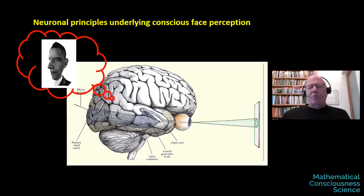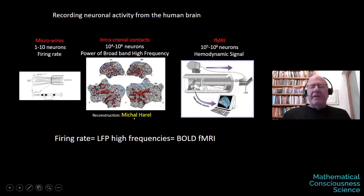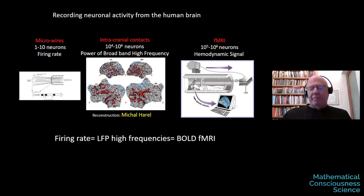The question is: what are the main neuronal principles that underlie the emergence of a face in our mind? Before jumping into the results, I would like to point out the method I'll be talking about mainly. Here in this presentation, I would like to focus on a very unique and rare set of data, which is intracranial recordings — opportunities for recordings directly from the human brain.